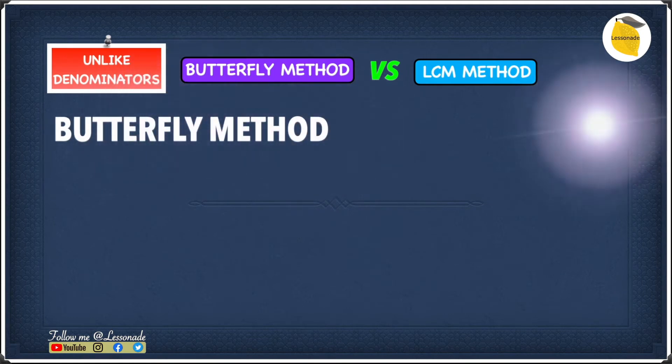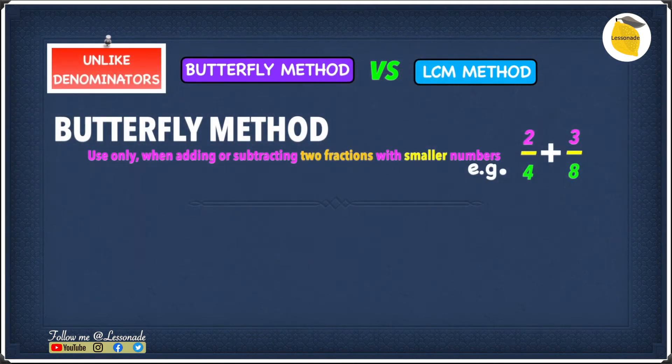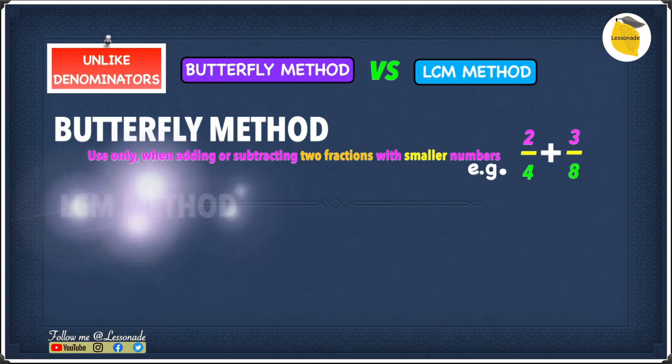With the butterfly method you only use it when adding or subtracting two fractions with smaller numbers. For example, if you have 2 over 4 plus 3 over 8, in this case we have smaller numbers so it's much easier to use the butterfly method.